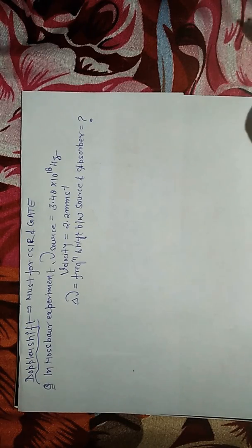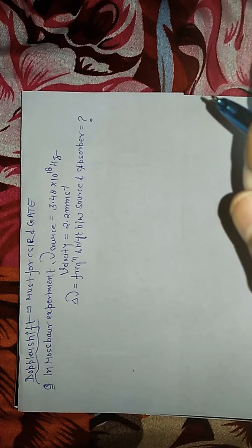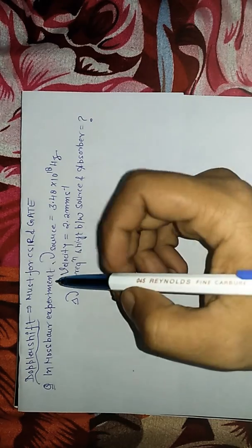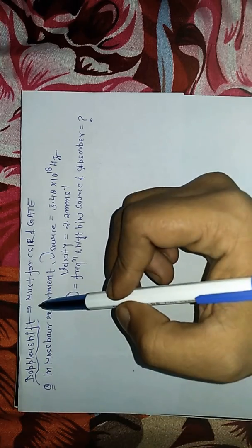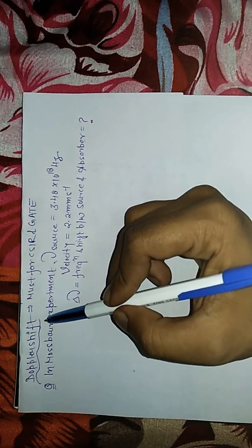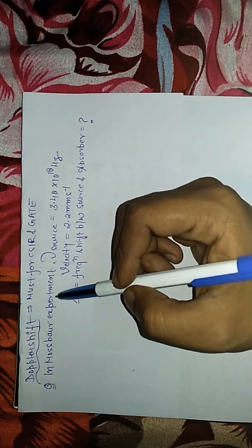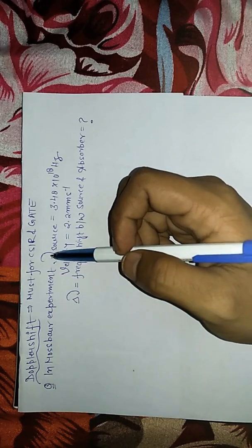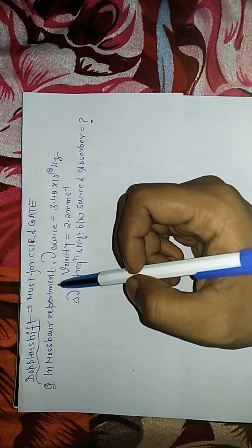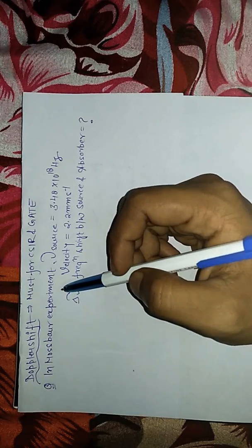Hello everyone, this is a very important topic as far as the CSIR and GATE examination are concerned. Every year or another, a question from Doppler shift has been asked. In Mössbauer spectroscopy, as we know, we use a source and an absorber nuclei. Absorber nucleus is iron-57 and source is cobalt-57.